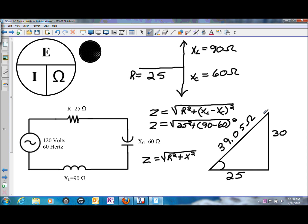And that is a total opposition to current flow, and with it being a series circuit, that accomplishes building the impedance triangle.